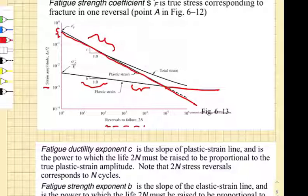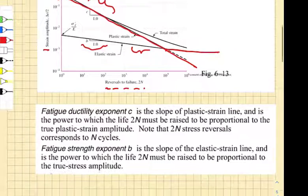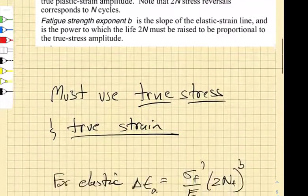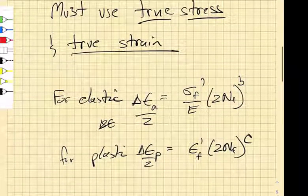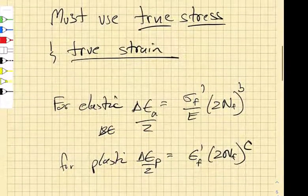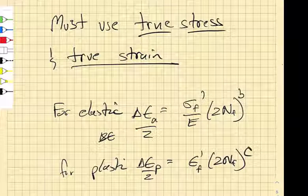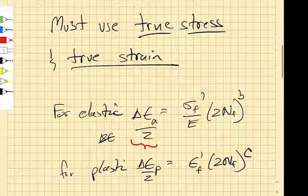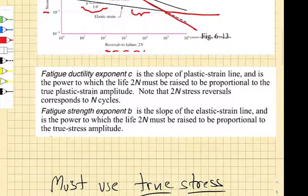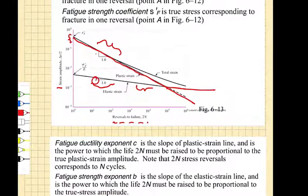So what you do is you have to now completely reframe the way you're studying this problem. And you're going to have to use true stress and true strain, which we'll talk about in a minute. But you realize that the equation for the strain amplitude that has to do with the low slope, the slope b, intersects the strain amplitude line with the ratio of the true stress at failure divided by the elastic modulus.